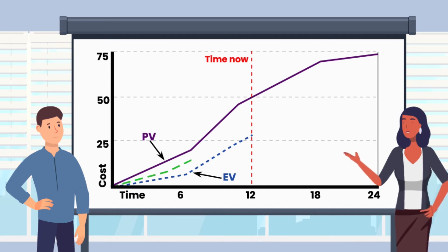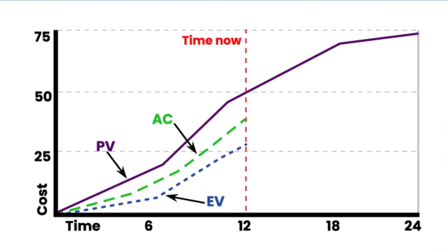That leaves us with the green dashed line. Any guesses as to what it might represent? Actual cost? Yes, indeed. AC stands for actual cost.